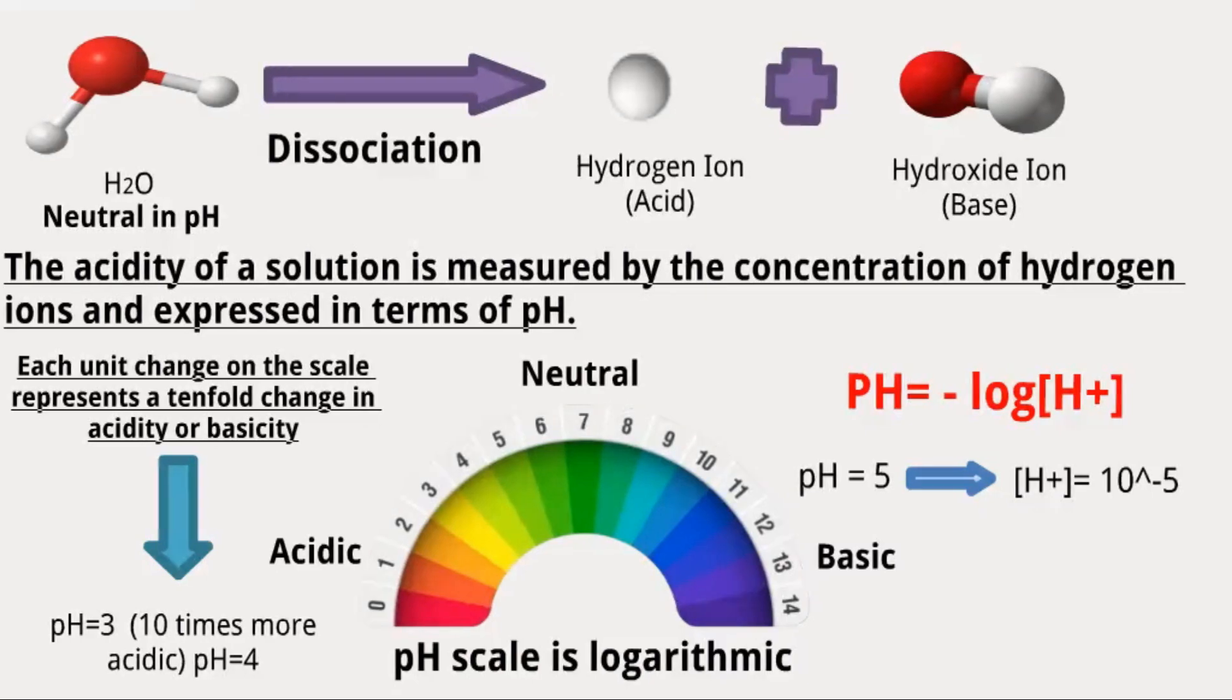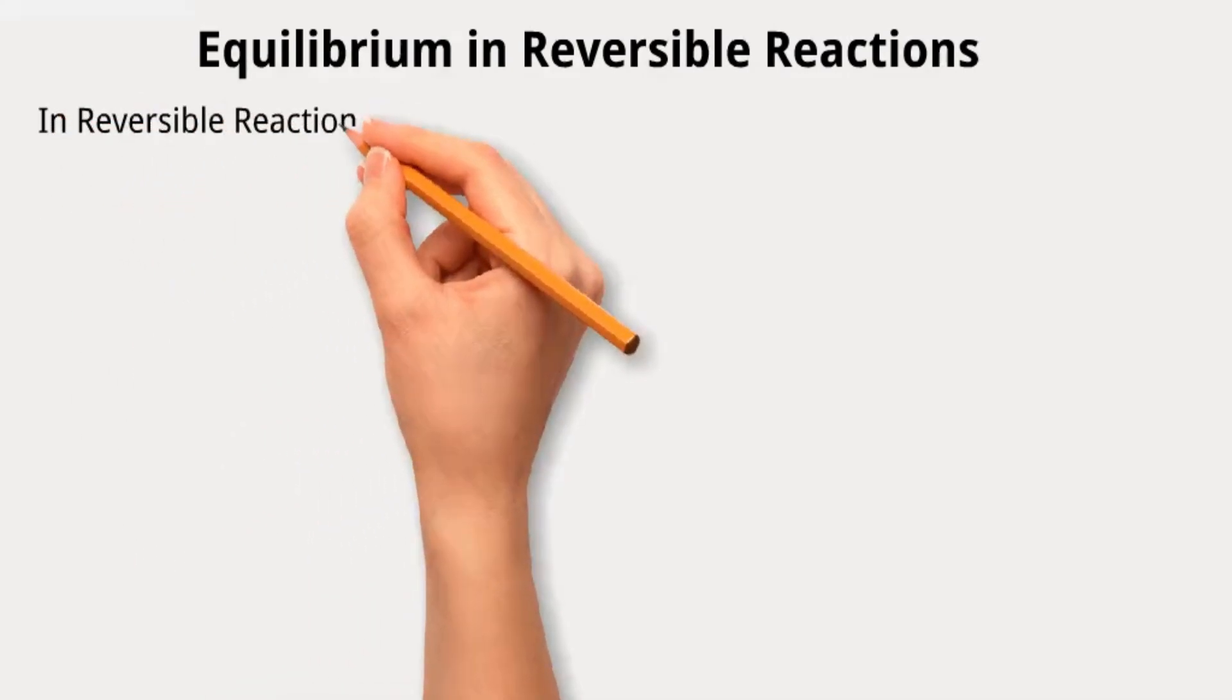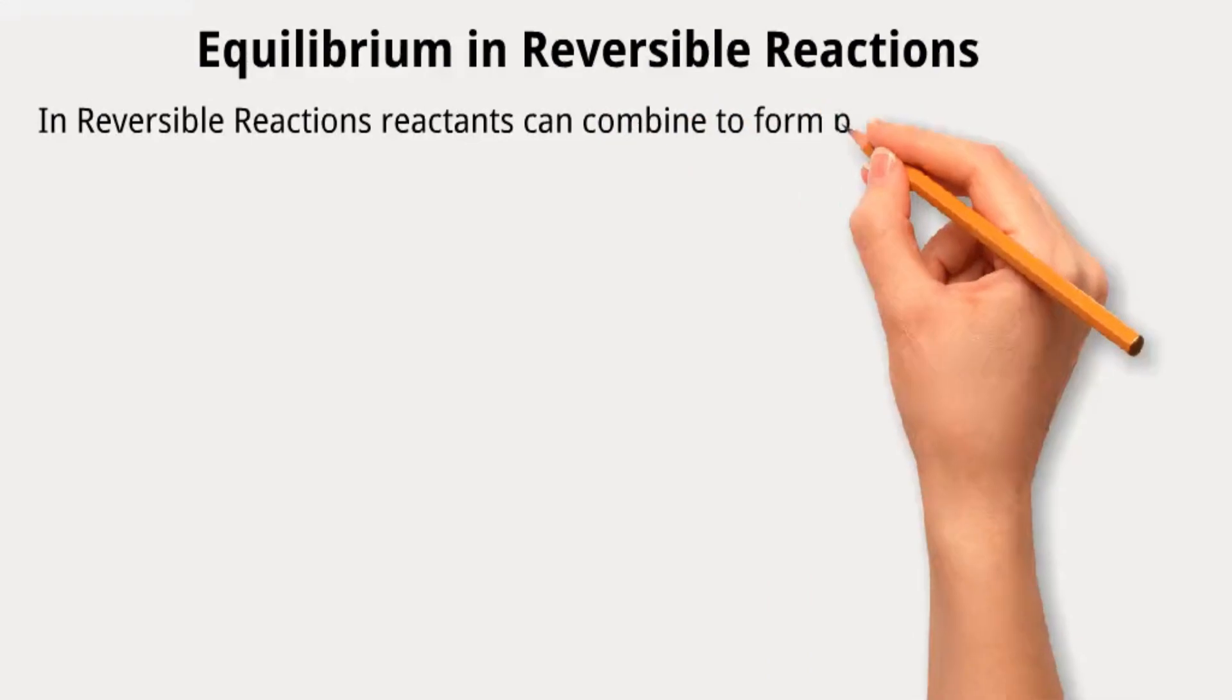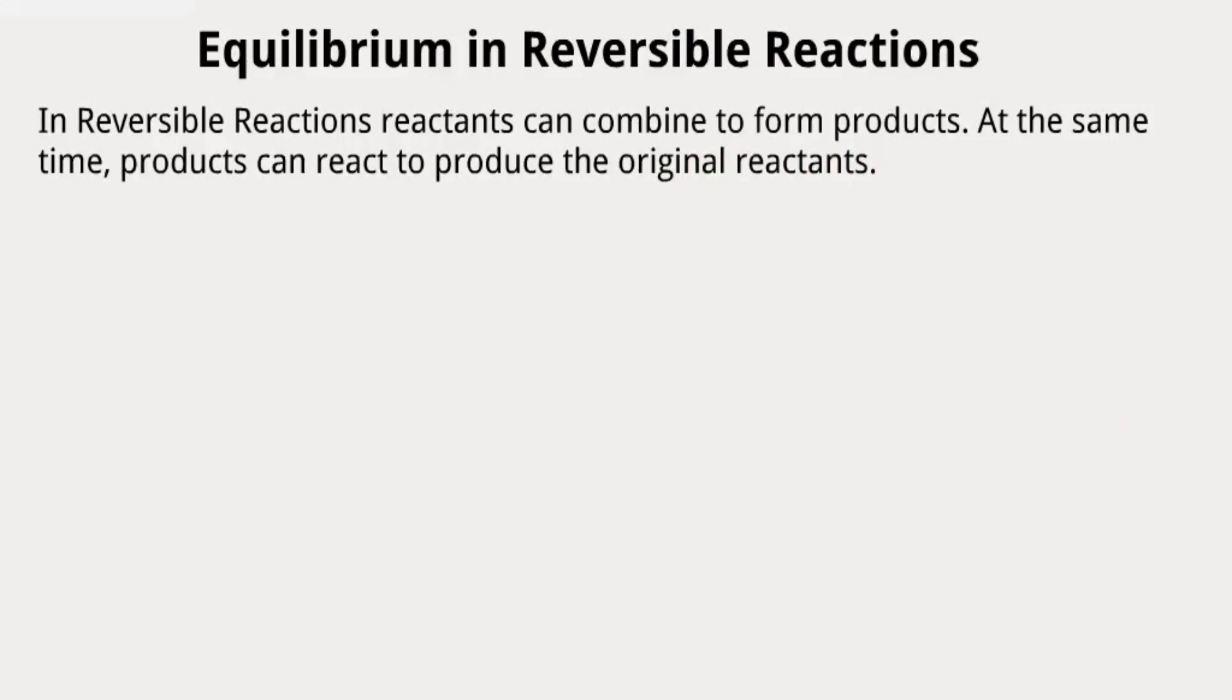To simplify the way in which buffers work, I want to explain a fundamental concept in chemistry, which is equilibrium in reversible reactions. First, what we mean by reversible reactions is that reactants can combine to form products. At the same time, products can react to produce the original reactants.